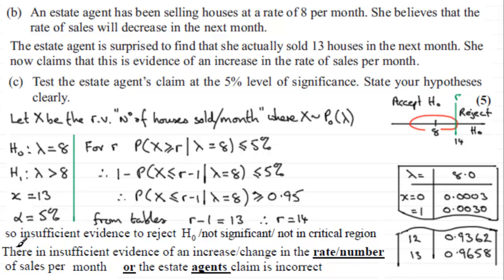And to summarize then, there is insufficient evidence of an increase or change in the rate, number of sales per month, or the estate agent's claim is incorrect. So I hope that's given you some idea across this problem if you did have some difficulty.